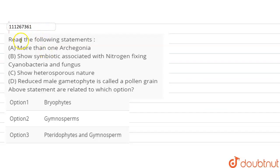The question is, read the following statement. Number first: more than one archegonia show symbiotic association with nitrogen fixing cyanobacteria and fungus, show heterosporous in nature, reduced male gamete is called a pollen grain.